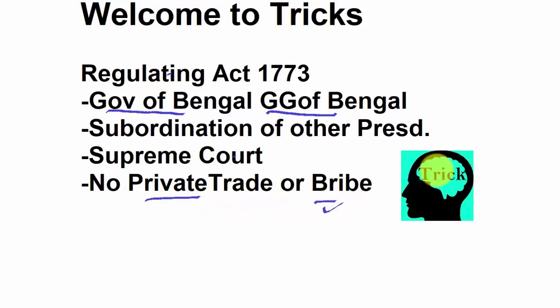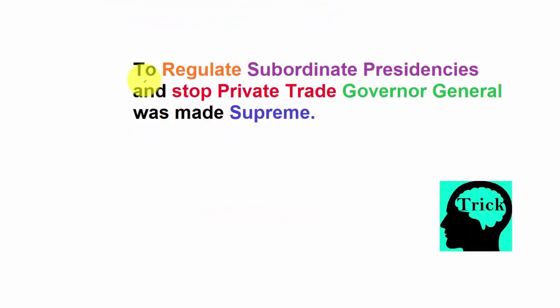To remember all these provisions, one simple trick is: 'To regulate subordinate presidencies and stop private trade, Governor General was made supreme.'